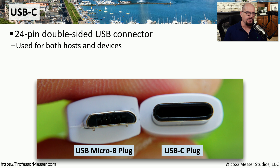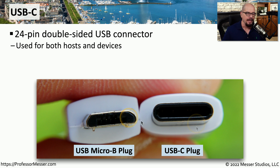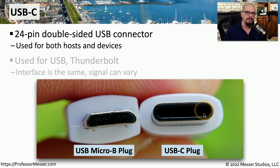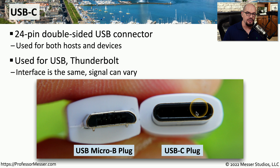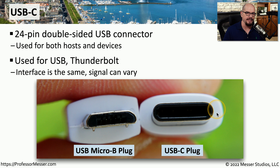A newer style of USB connector is the USB-C connector. This USB-C connector is double sided, so there's no top or bottom — you can plug it in in either orientation. It's also very small, about the same size as the original USB micro B plug. USB-C plugs are used not only on peripheral devices but also on computers. This plug is used for more than just serial connections — you can run different signals through a USB-C cable, so you might see it used for serial connectivity, Thunderbolt devices, or DisplayPort devices.